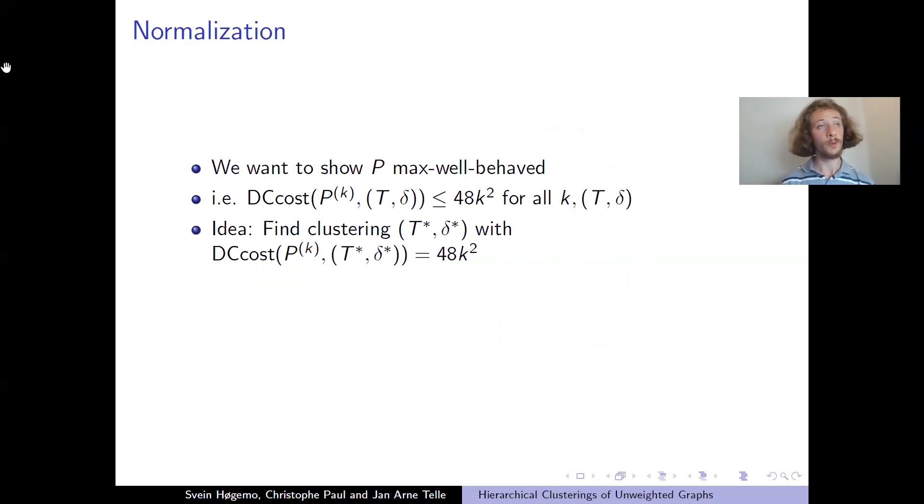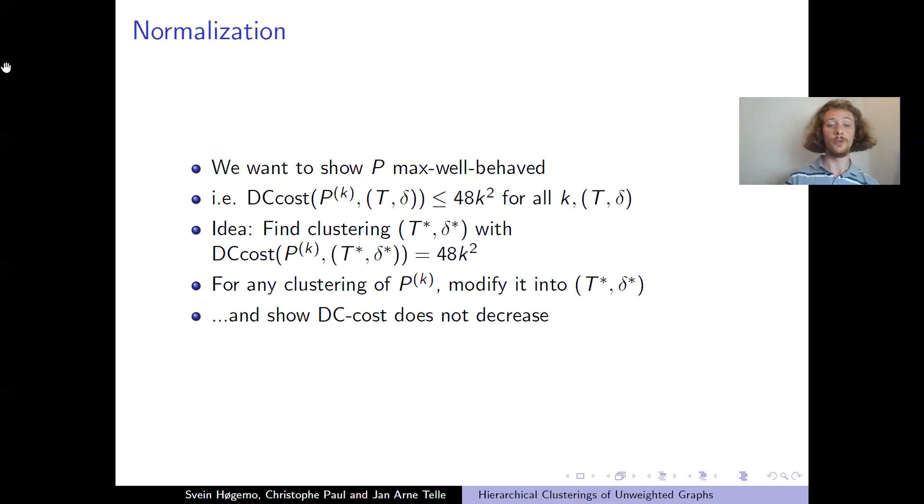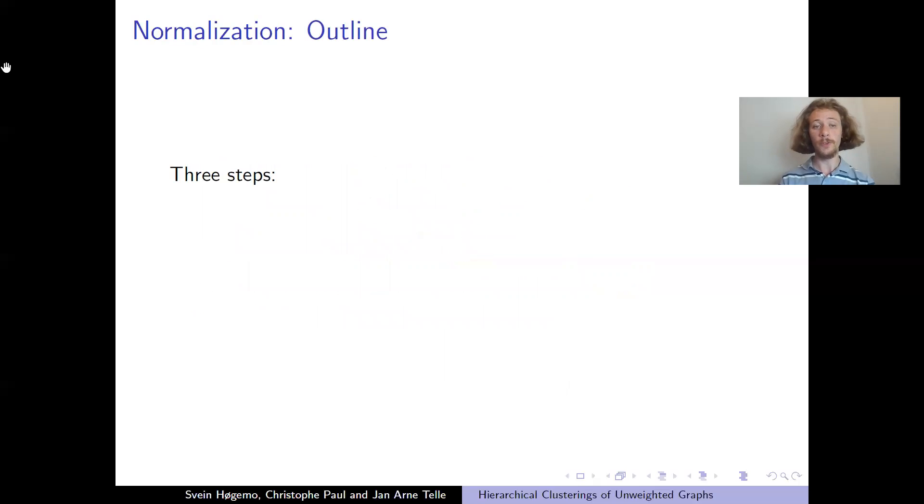So our idea was to find just, okay, we know we have one clustering with this cost. It's easy to find. You just cluster one optimally and then you copy this clustering. And then we wanted to show that, okay, if we can find some way of modifying any clustering into this best clustering and show that the DC cost never decreases when doing this, then we can say that, okay, for any clustering, we cannot have a higher cost. And this is what we call the normalization procedure.